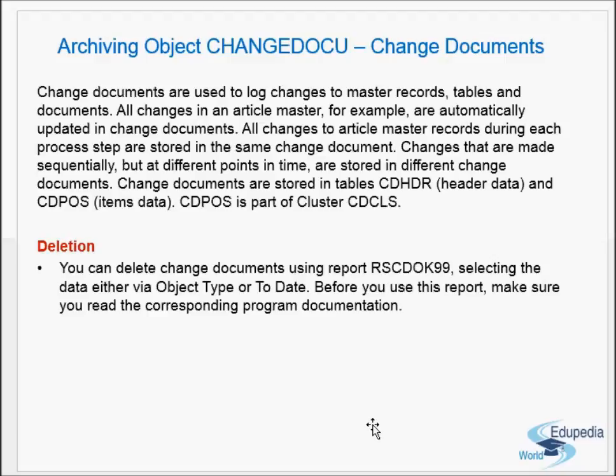Changes made sequentially but at different points in time are stored in different change documents. The change document tables are CD_HDR (header table), CDPOS (items/data table), and CDCLS, which is the cluster table for this data. DB_TAB_LOG is a separate table where changes to specific tables are logged if table logging is activated.